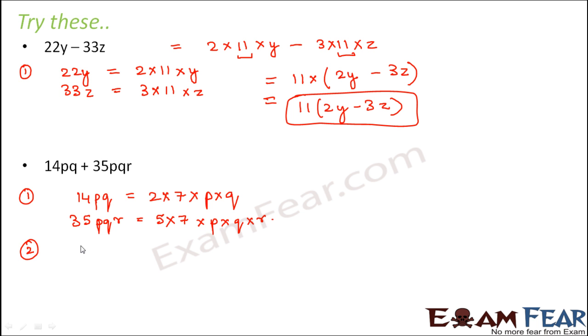In step number 2, we can write 14pq plus 35pqr as 2 into 7 into p into q plus 5 into 7 into p into q into r. What is common in both these two? 7pq is common in both of these. Therefore, in step number 3, what do we do?